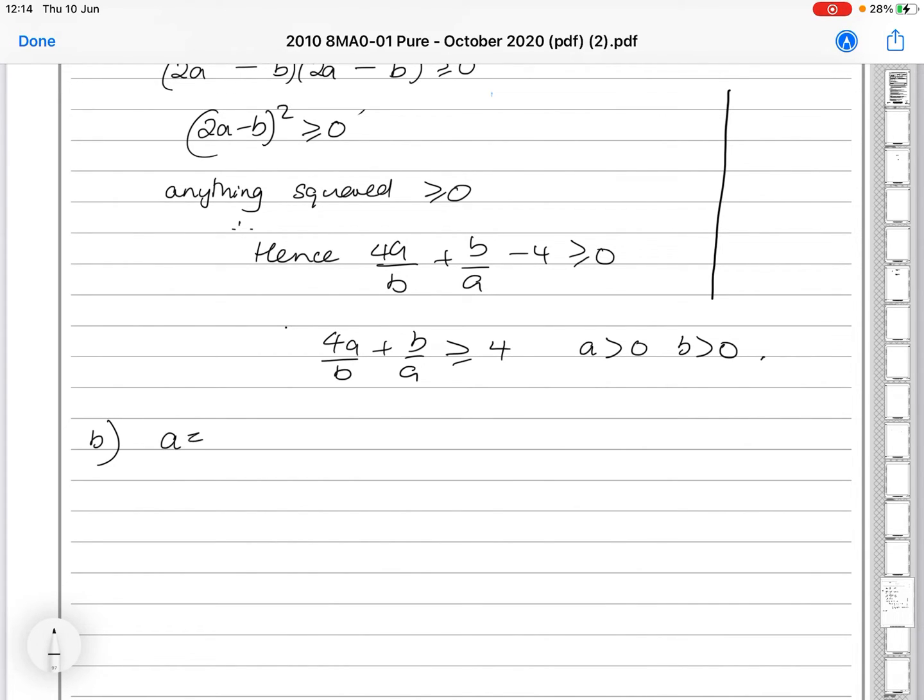So, if we said a equals 1 and b equals minus 1, what would happen? 4 times 1 over minus 1 plus minus 1 over 1 gives us minus 4 minus 1. And greater than or equal to 4?